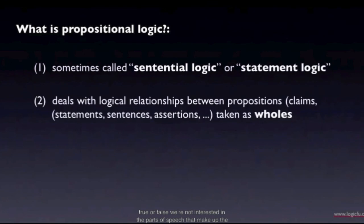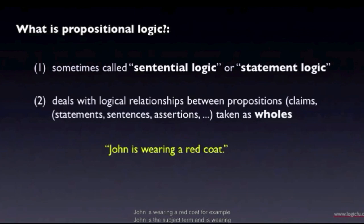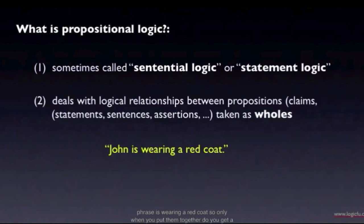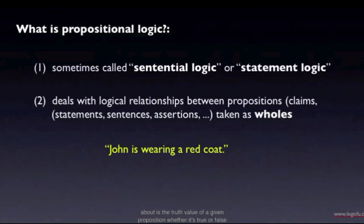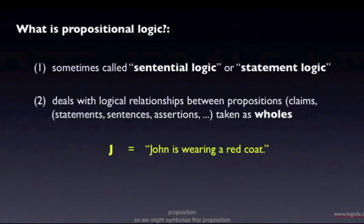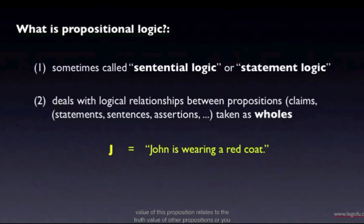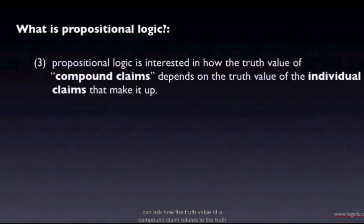We're not interested in the parts of speech that make up the proposition, like subject terms and predicate terms. For example, in 'John is wearing a red coat,' 'John' is the subject term and 'is wearing a red coat' is the predicate. The subject term 'John' by itself is neither true nor false, and neither is the predicate phrase 'is wearing a red coat.' Only when you put them together do you get a whole proposition that can be true or false. In propositional logic, all we care about is the truth value of a given proposition — whether it's true or false. This is why we use single letters to symbolize a proposition, such as the letter J to stand for the whole proposition 'John is wearing a red coat.' You can then ask how its truth value relates to the truth value of other propositions or component claims.